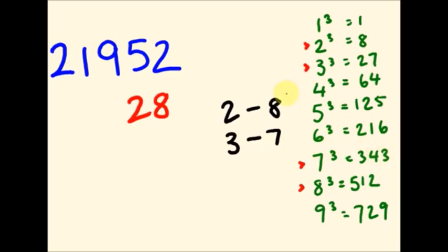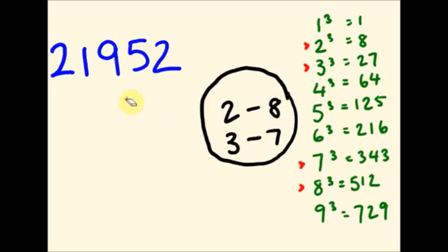Okay. So, probably the major thing you have to remember so far, out of these guys, are these particular ones here. These particular pairs. 2 and 8, and 3 and 7. Now, with that in mind, we can work out our cube roots, and I'll show you how that's done.